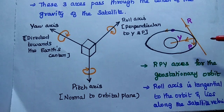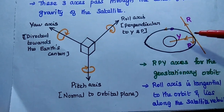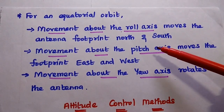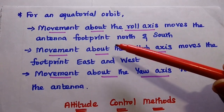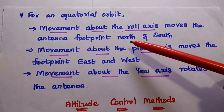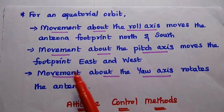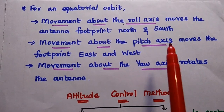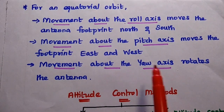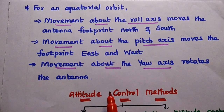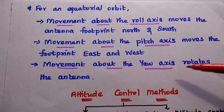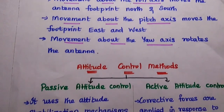For a geostationary satellite in an equatorial orbit, movement about the roll axis moves the antenna footprint north and south. Movement about the pitch axis moves the footprint east and west. Movement about the yaw axis results in rotation of the antenna. These 3 movements are very important to maintain 3-axes stabilization.